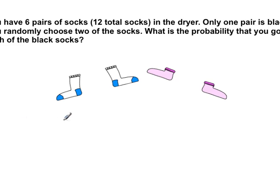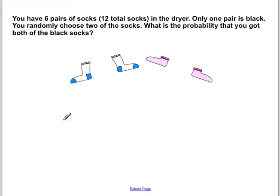All right, the sock question. You have 6 pairs of socks, 12 total socks in the drawer, and the dryer. Only 1 pair is black. You randomly choose 2 of the socks. What is the probability that you got both of the black socks? All right, so this is a compounded event. So you have 12 total socks in the dryer when the first time you pull it.